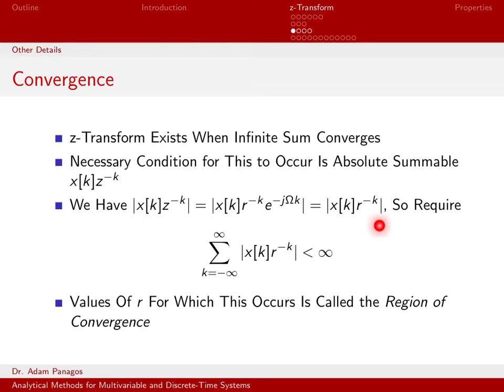So if we need this quantity to be absolutely summable, that's the same as saying we need this quantity to be absolutely summable.